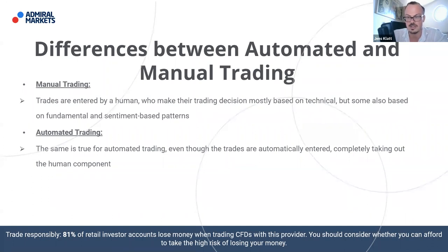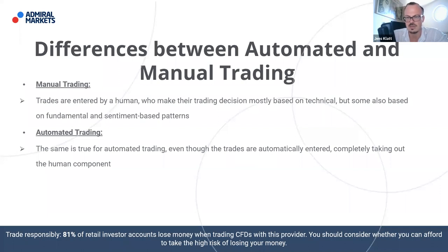If you look at the price action the Friday after, you'll see that gold performed extraordinarily well that day. If you had fully automated your trading and just followed the predefined rules — buy gold on the closing price Thursday and take the trade out the day after on the closing price Friday — you would have made a profit. By following it purely automatically, you would have removed the human component: the emotions, the feeling that something's probably not working.